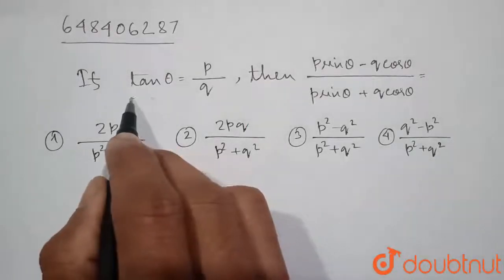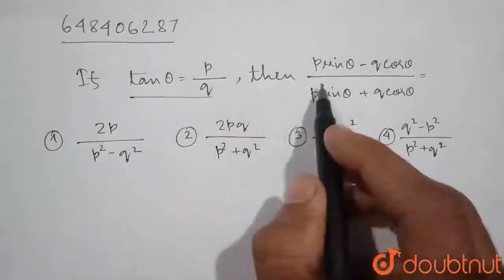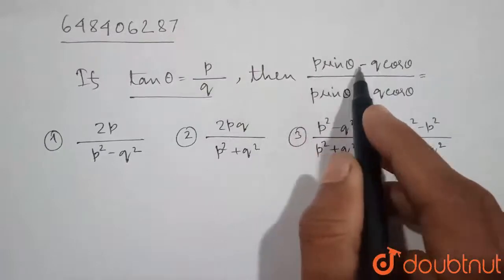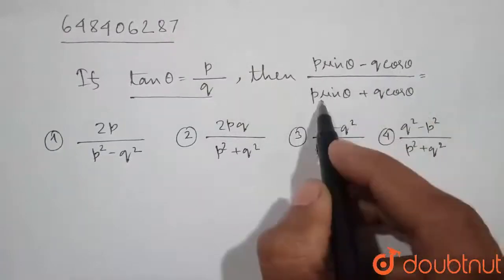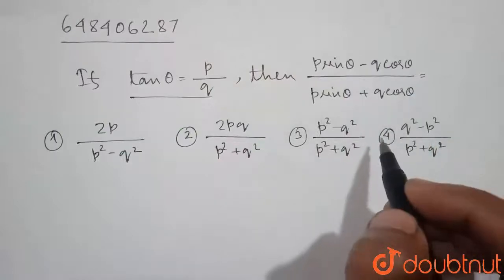Here it is given that tan theta is equal to p by q. And then we need to find the value of p sin theta minus q cos theta divided by p sin theta plus q cos theta.